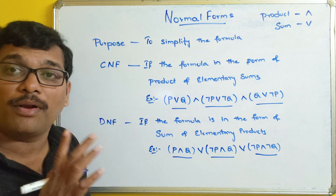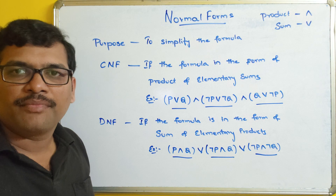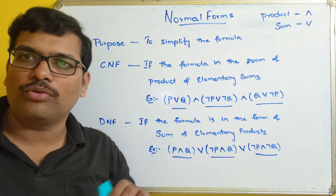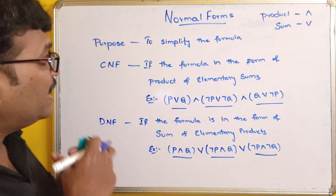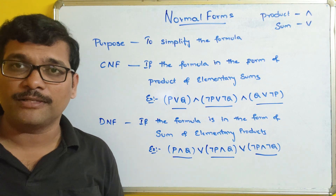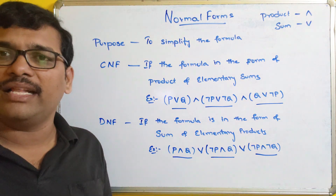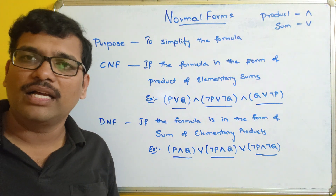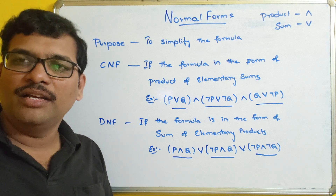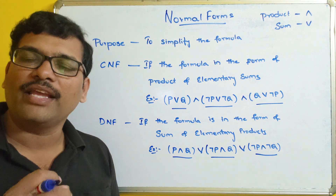These are the two different normal forms which will simplify the given formula to find the logical equivalence. Hope you understood the introduction to normal forms, why we are using them, the different types, and the definition of CNF and DNF. If you have any doubts, feel free to post in the comment section — I will try to clarify all your doubts. If you enjoyed the session, like and share it with your friends, and don't forget to subscribe to our channel. Thanks for watching, thank you very much.